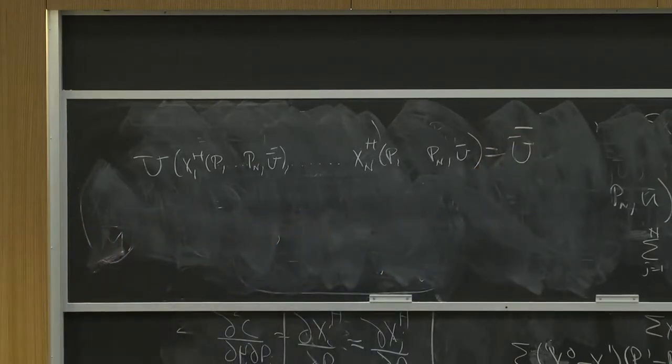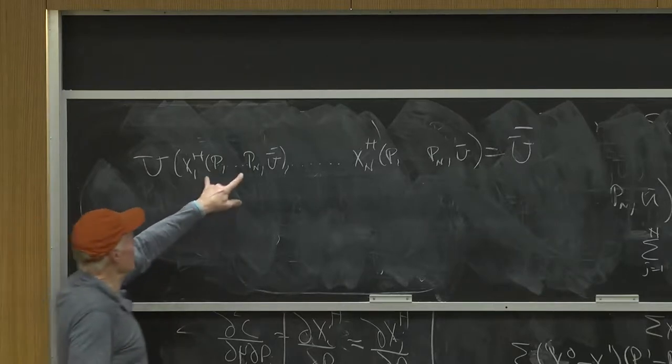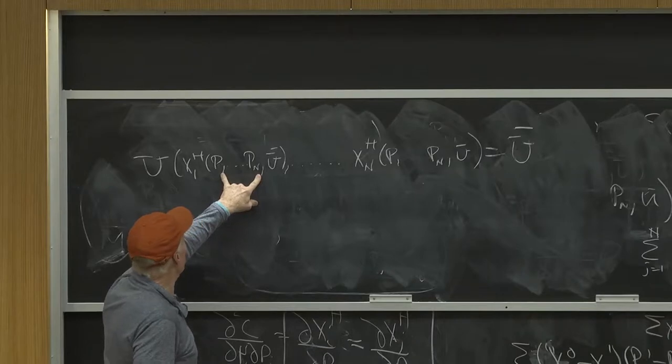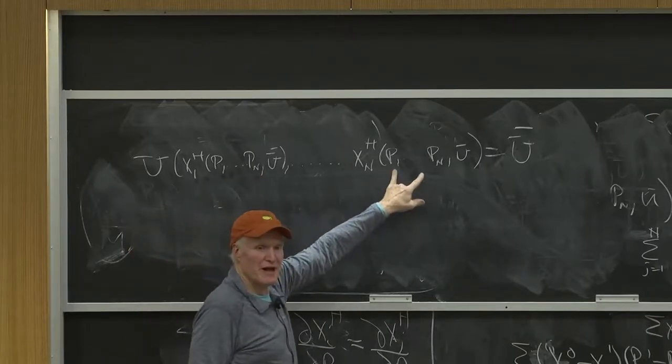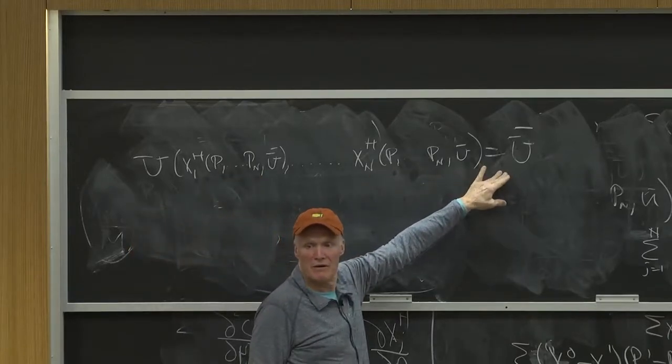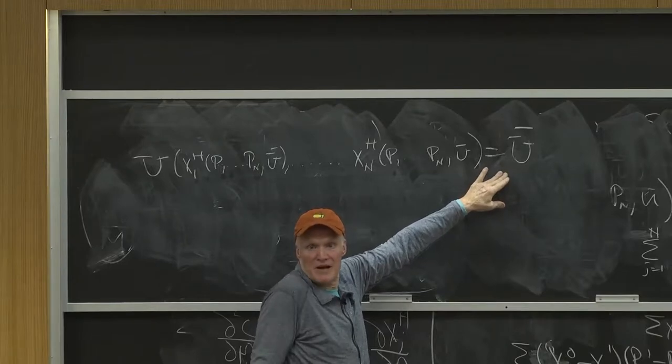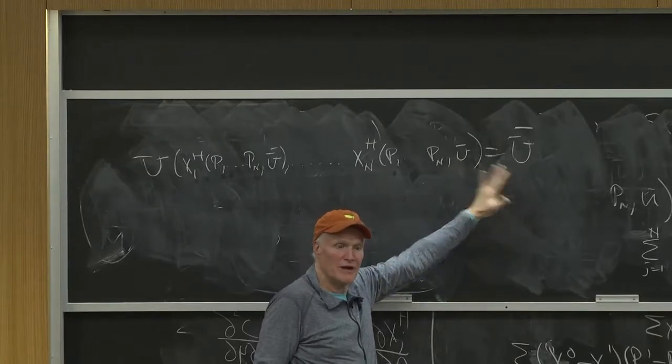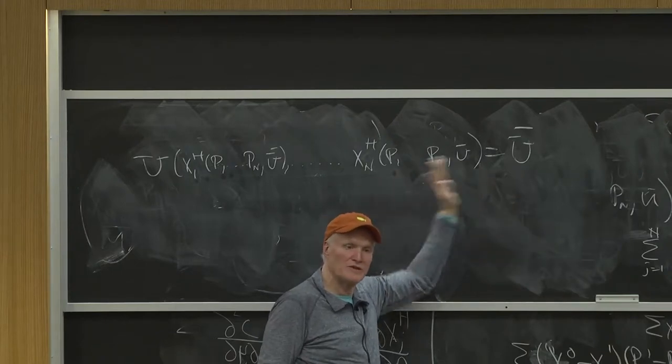For the Hicksian demand system, if I put in the quantity that I consume at these prices into the utility function, I better get back u bar. Because that's how they're built. This choice is built to give me u bar. So it has to give me u bar, no matter which prices I throw in here.